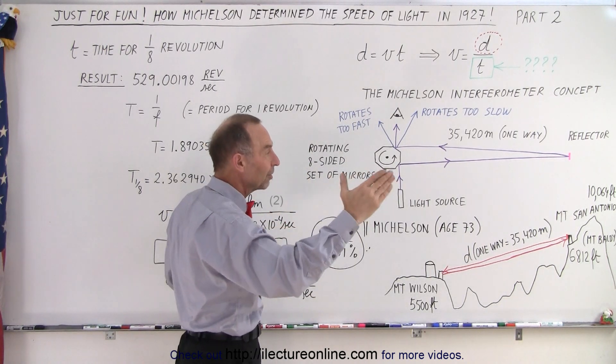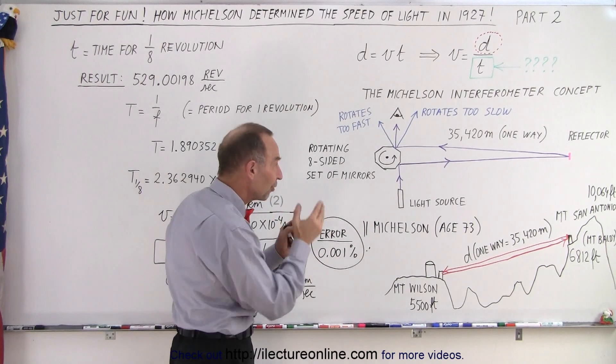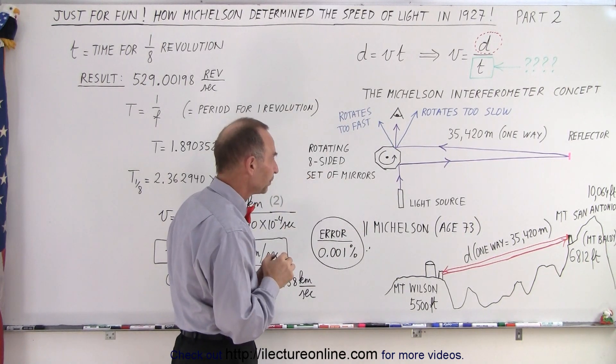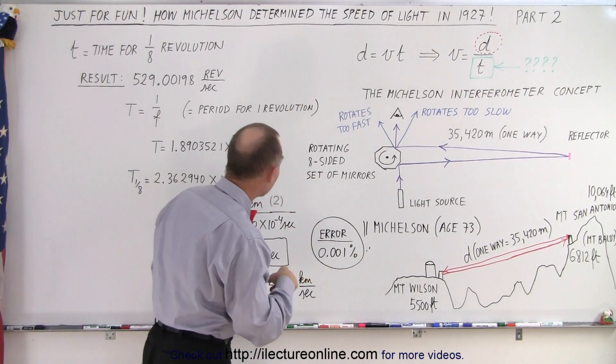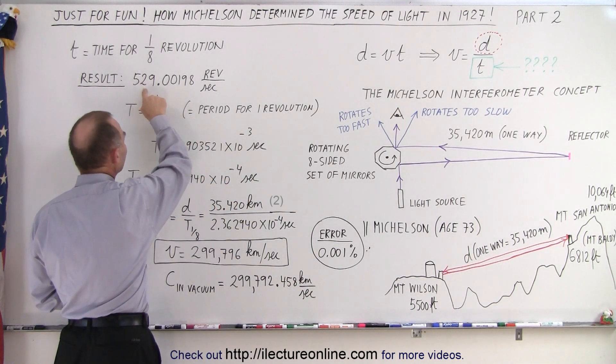They get a very accurate timing for a single one-eighth of a turn. With the counter, they would then come to the point where they would measure just slightly over 529 revolutions per second.